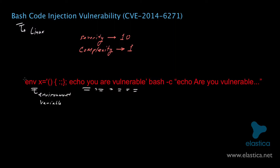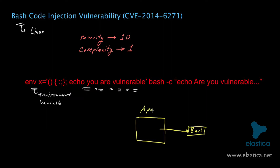In practice, what would happen is that the bad guy would find an application running on a server that at some point uses Bash and passes environment variables to Bash in a way that the bad guy can implicitly control. For example, you might have a web server running Apache. Web server software often uses something known as the Common Gateway Interface, or CGI, to generate dynamic web content. CGI itself can invoke Bash, and the attacker can control what environment variables are passed to this invocation of Bash. Since it's possible to put arbitrary commands into an environment variable and have those commands executed by Bash, the attacker can cause quite a lot of damage.